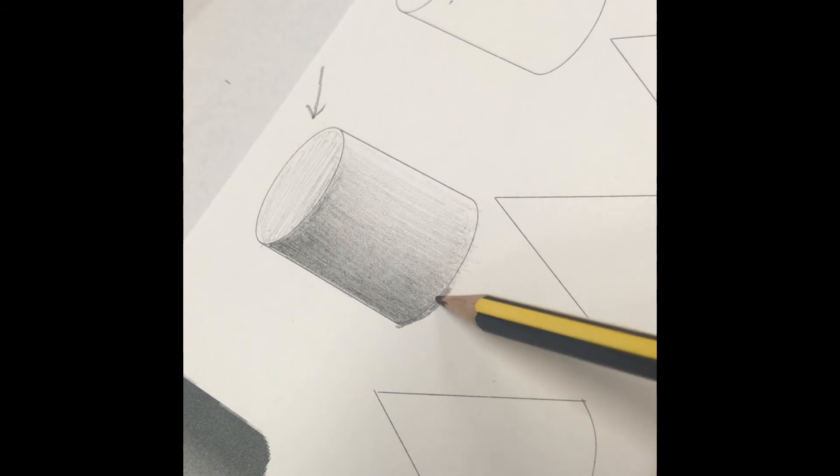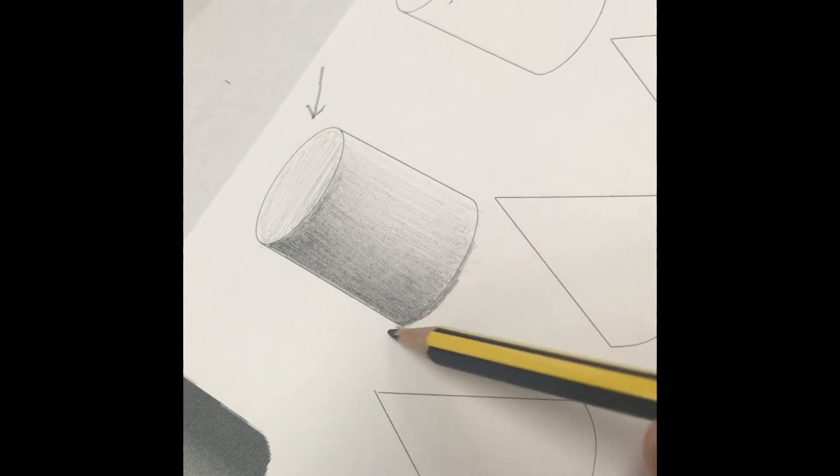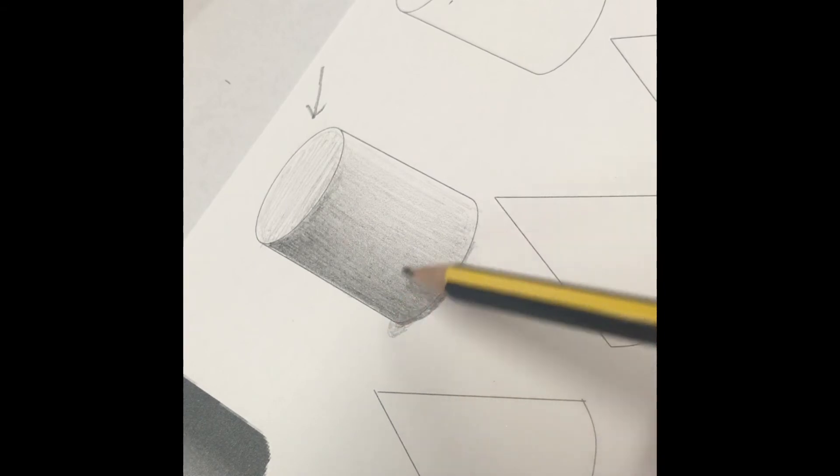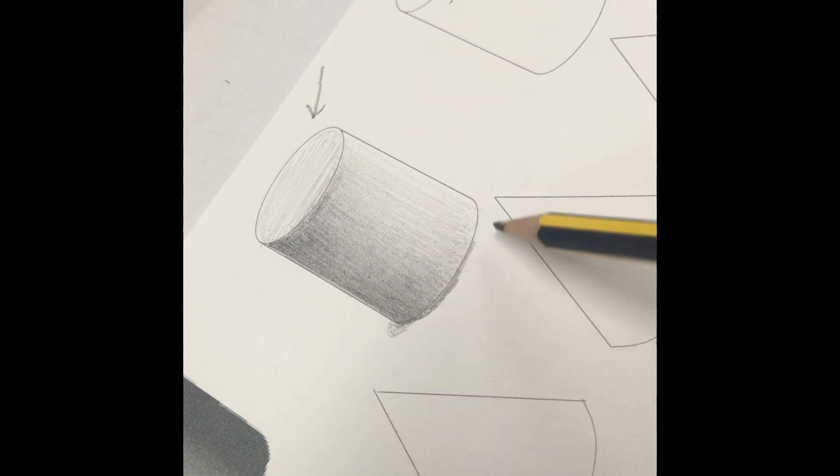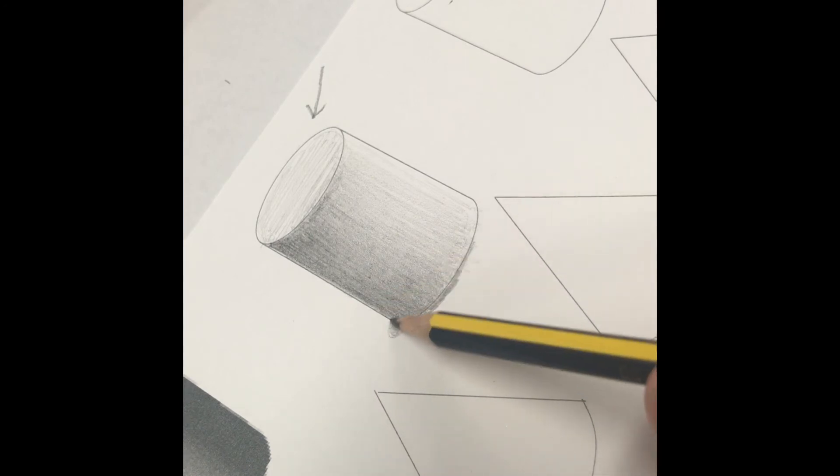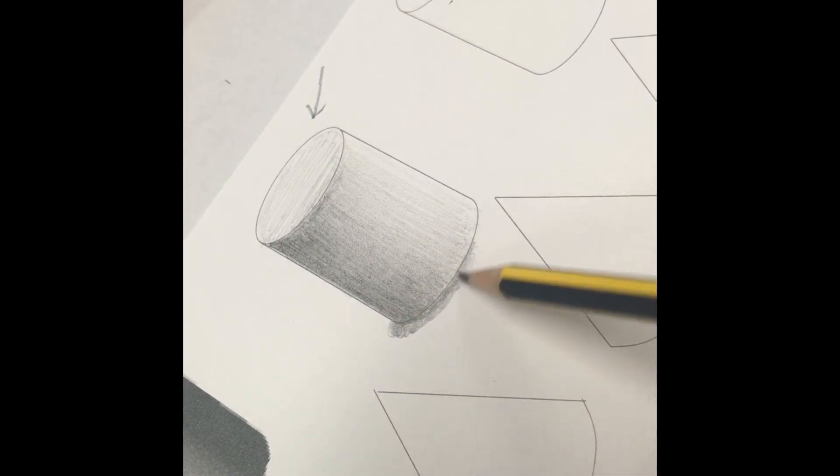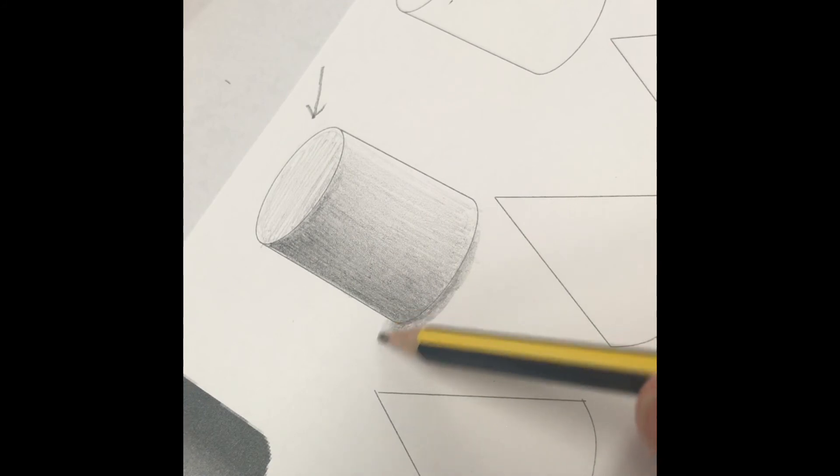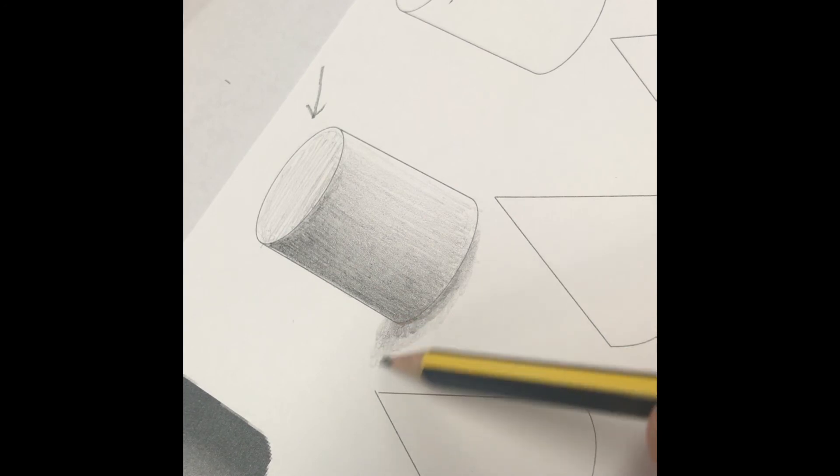When adding the shadow at the bottom, make sure this is at the darkest side of the cylinder and should be curved around rather than straight. Make sure it is darkest closest to the cylinder where it should touch the actual surface.